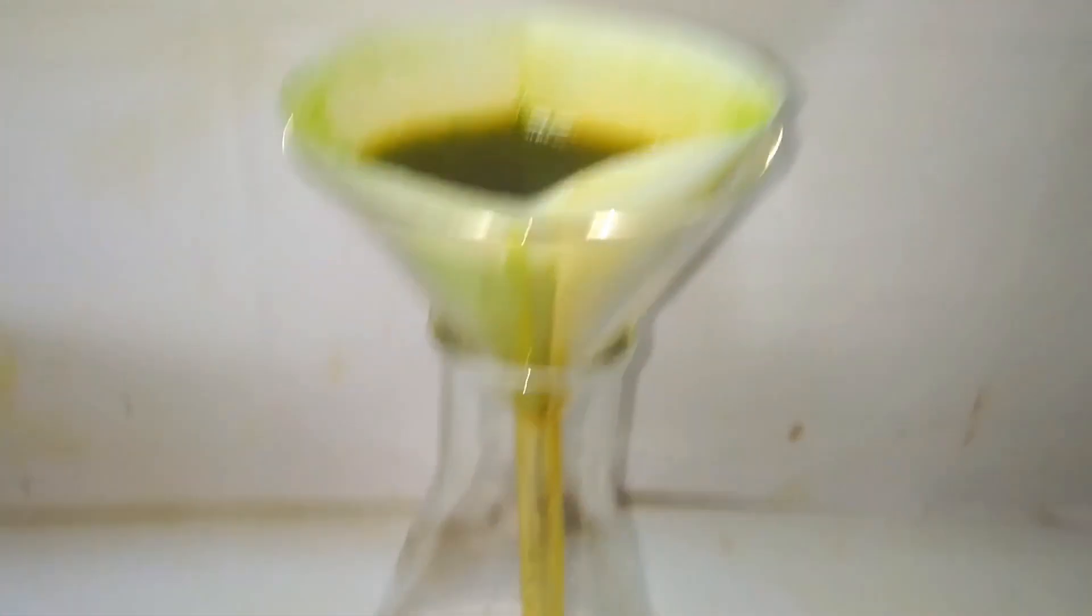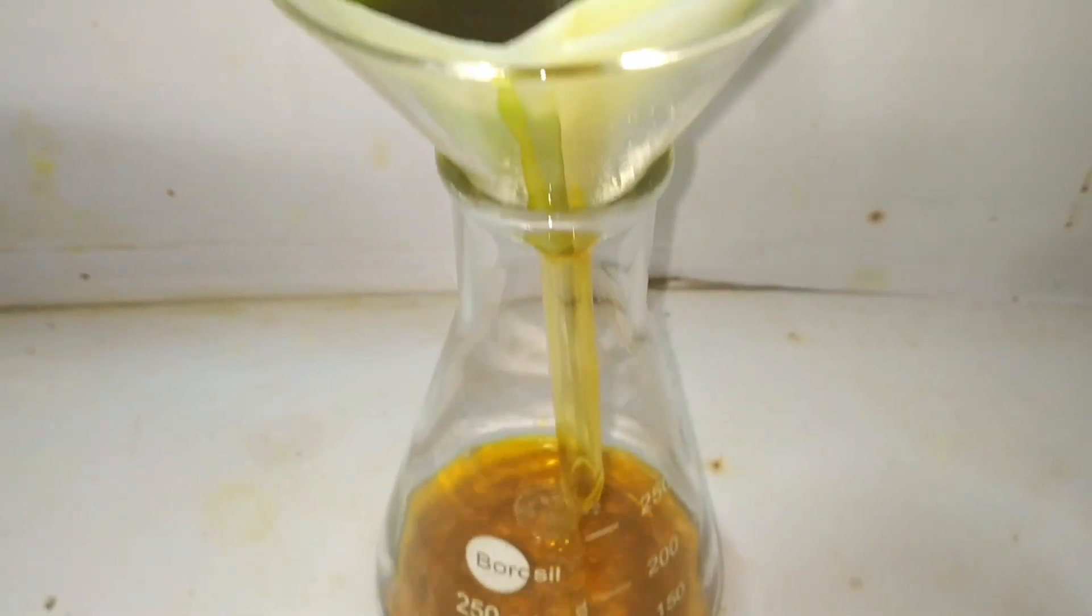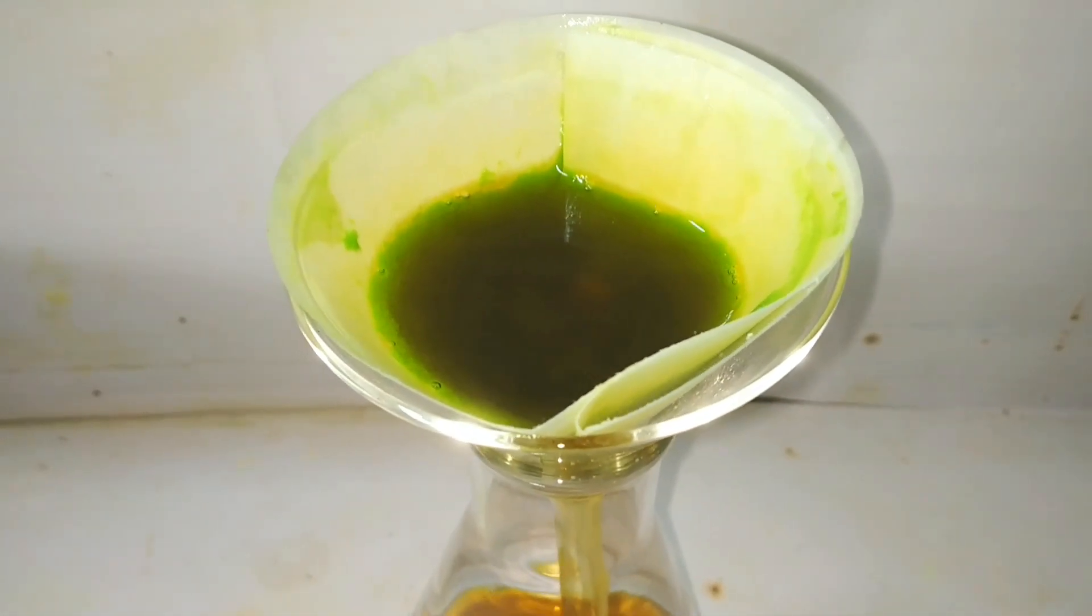On filtration you can see that the precipitate has a green color and the filtrate has an orange color.